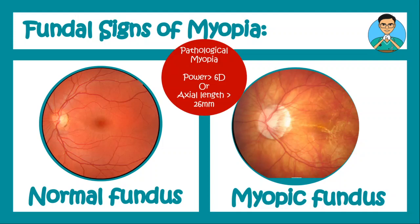On the left hand side I have a normal fundus for you, and on the right hand side let us see what myopic fundus findings we can observe. To begin with, we can see a temporal myopic crescent, which occurs due to choreoretinal atrophy around the optic disc on the temporal side.